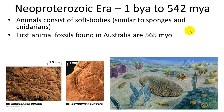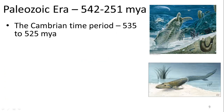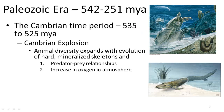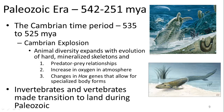The first animal fossils are found at 565 million years old, though it's thought animals evolved much earlier. Fossils from this era are called Ediacaran biota. Animal diversity continued to increase into the Paleozoic era — this is where we have the Cambrian period and the Cambrian explosion, where animal diversity expanded with the evolution of hard, mineralized skeletons. This formed predator-prey relationships, oxygen increased in the atmosphere, Hox genes diversified, and both invertebrates and vertebrates made the transition to land.